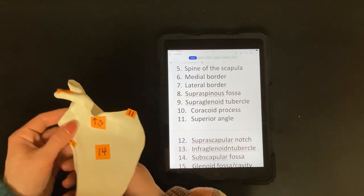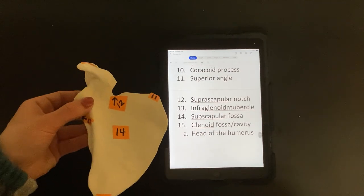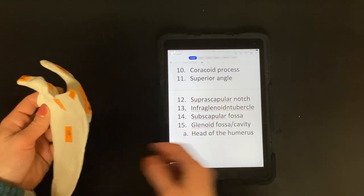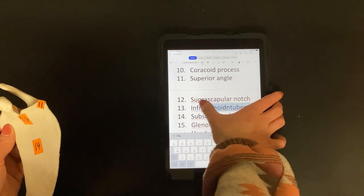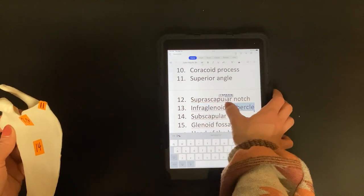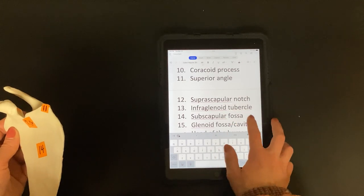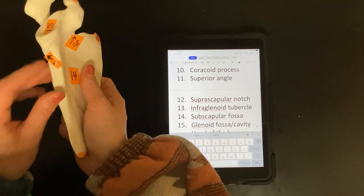Twelve is the suprascapular notch. Thirteen is your infraglenoid tubercle. Let me fix that real quick. There we go, infraglenoid tubercle. Where is it? Here.